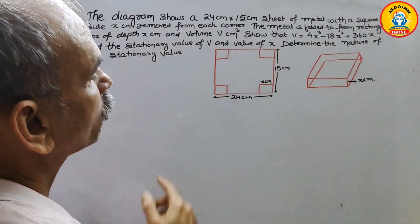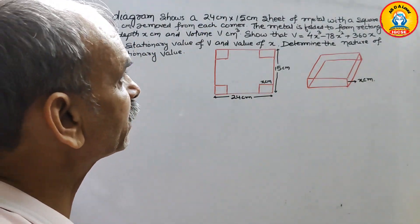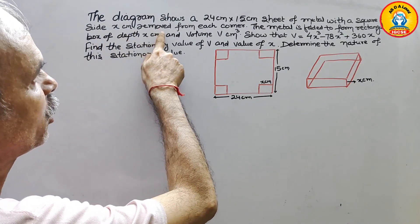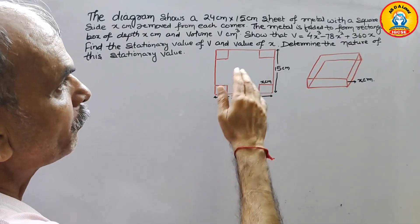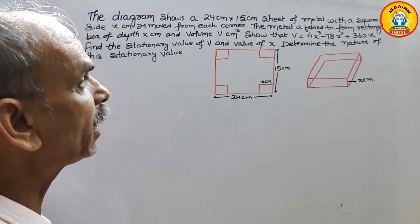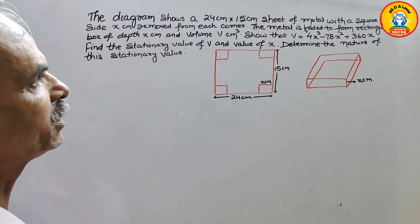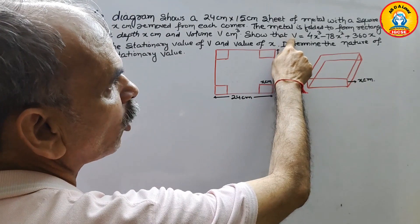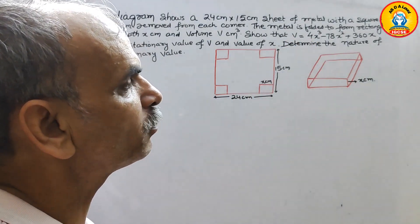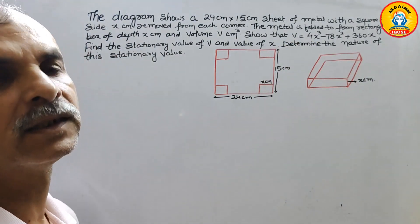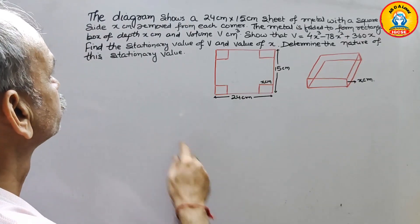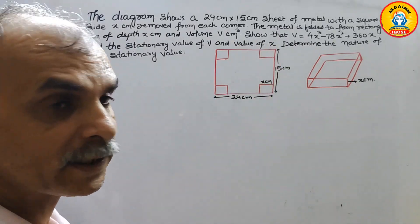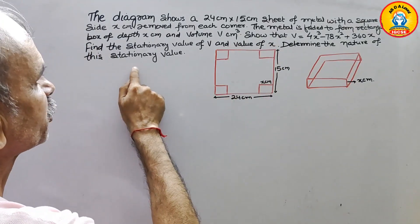The diagram shows a 24 cm × 15 cm sheet of metal with a square of side x cm removed from each corner. The metal is folded to form a rectangular box of depth x cm and volume V cm cubed. Show that the volume is equal to 4x³ minus 78x² plus 360x. Find the stationary value of V and the value of x. Determine the nature of this stationary value.